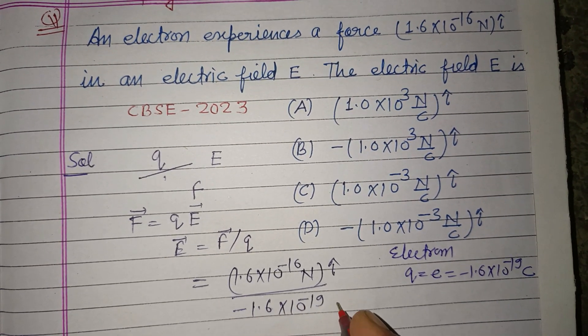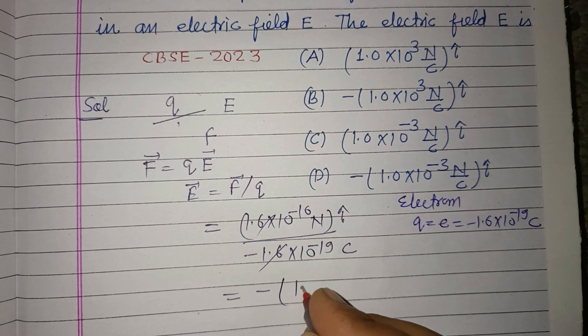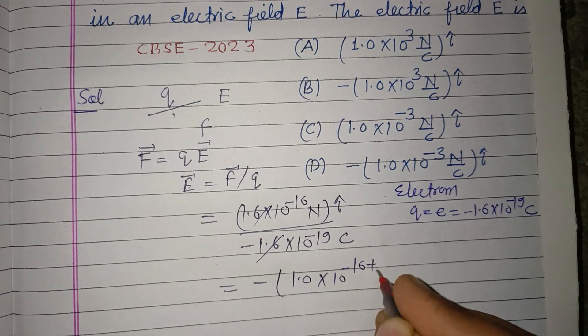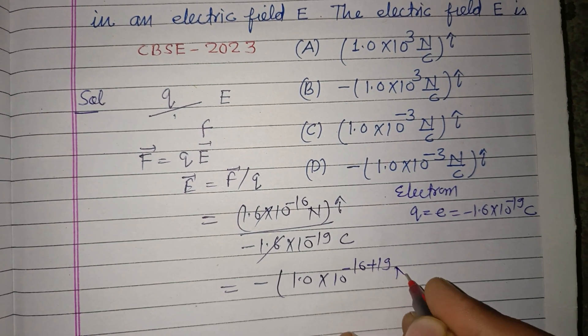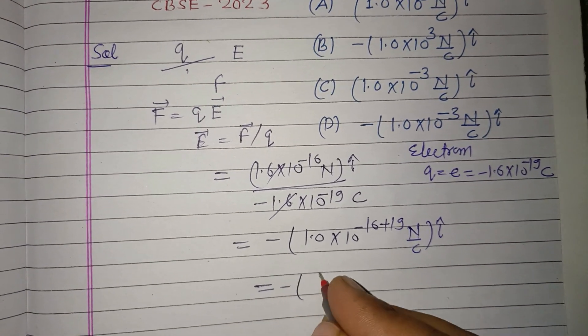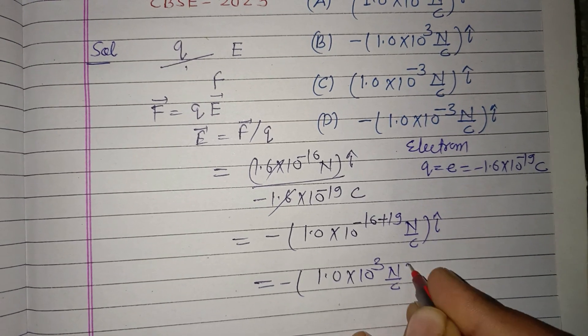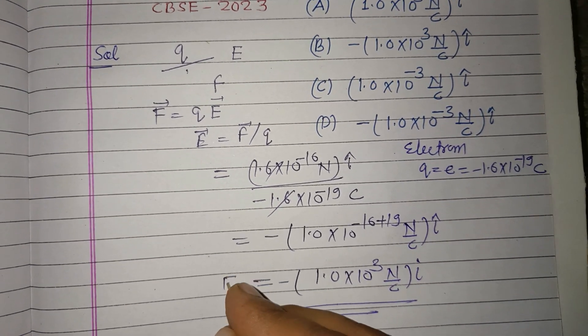therefore this is 1×10^(-16+19) Newton per coulomb in î direction. So 1×10^3 Newton per coulomb î is the electric field.